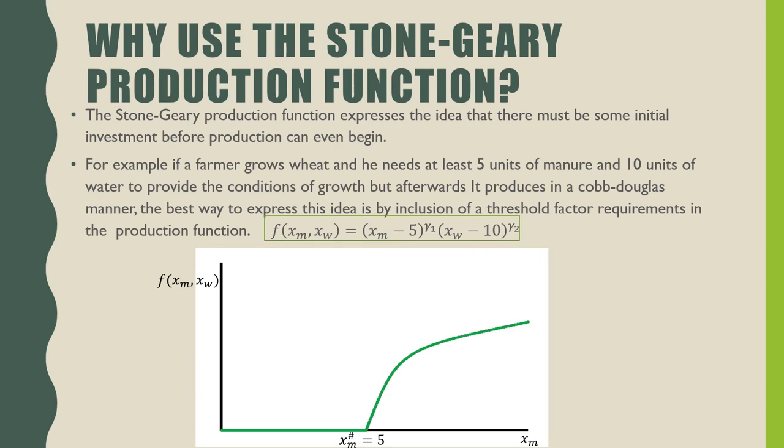Why use the Stone-Geary production function? The Stone-Geary production function expresses the idea that there must be some initial investment before production can even begin. For example, if a farmer grows wheat and needs at least 5 units of manure and 10 units of water to provide the conditions of growth, but afterwards it produces in a Cobb-Douglas manner, the best way to express this idea is by inclusion of a threshold factor requirement in the production function.